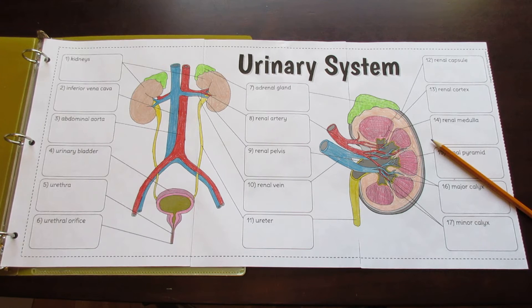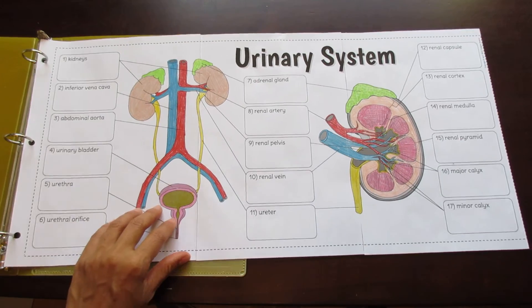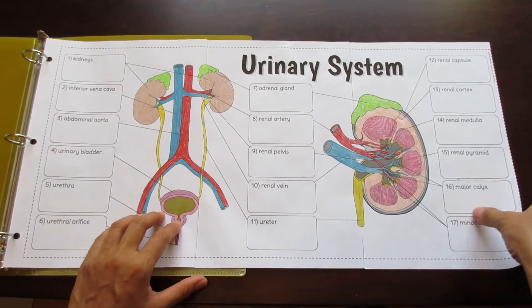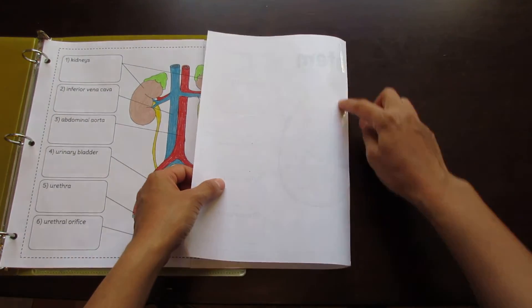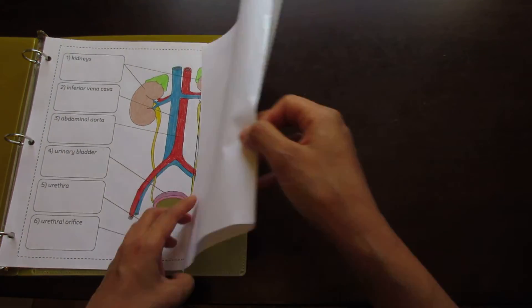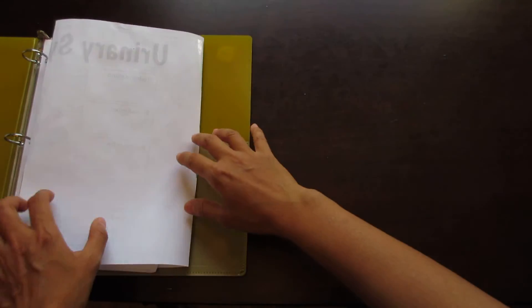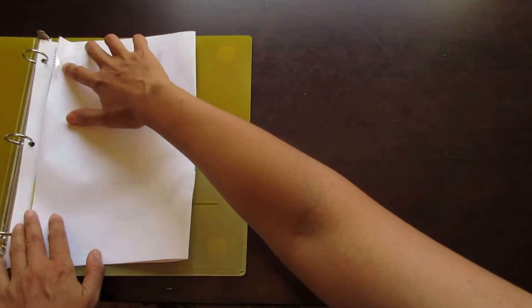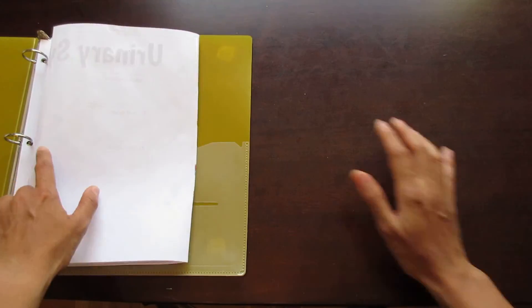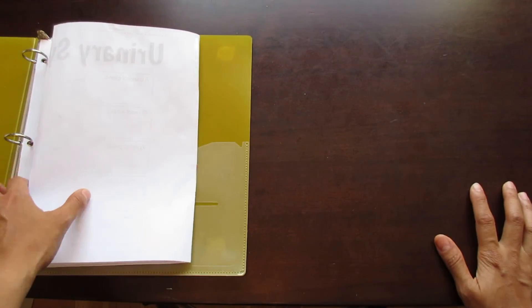This is the Tang Star Science Big Urinary System Foldable. It's made up of three pages that when cut along the seams and taped will create a foldable that fits nice and neatly into a binder without impeding the binder rings.